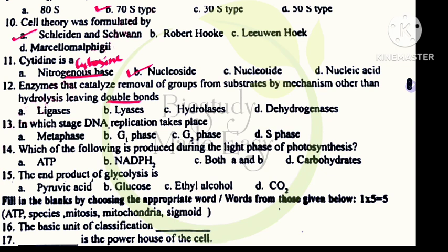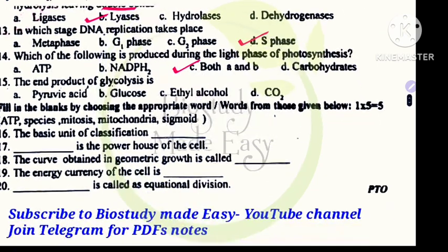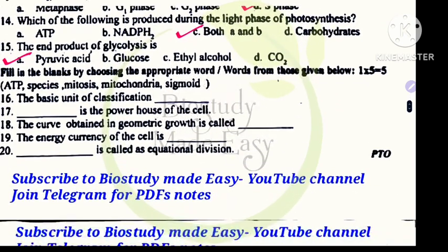Enzymes that remove groups and double bonds form are lyases. DNA replication in S phase. Light phase of photosynthesis produces both A and B, that is ATP and NADPH2. End product of glycolysis is pyruvic acid.